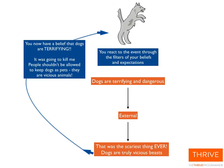Next time: 'Dogs are huge, dogs are really scary, dogs are terrifying, dogs are dangerous.' You process externally again: 'Oh my god, that was the scariest thing ever, that dog — I thought it was going to attack me, I thought it was going to kill me.' You now have a belief that dogs are terrifying, that dog was going to kill you, people shouldn't be allowed to keep dogs as pets, dogs are vicious animals.